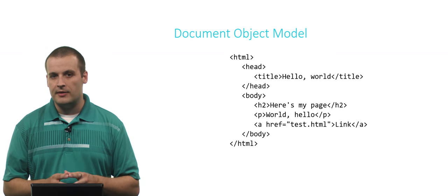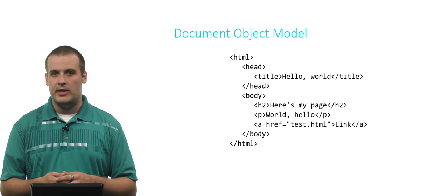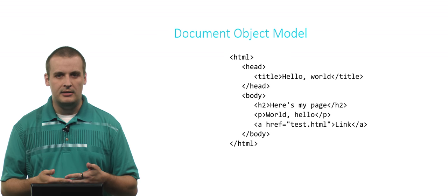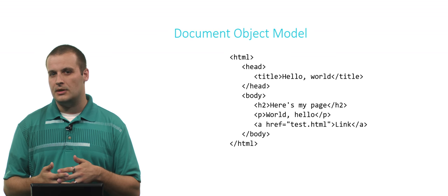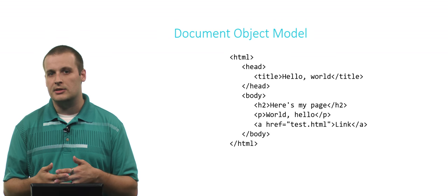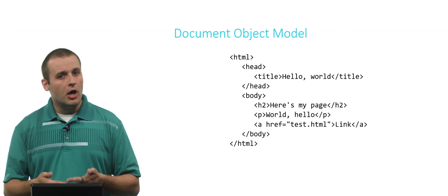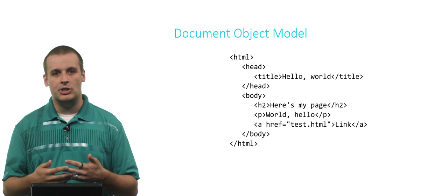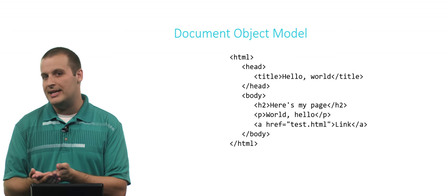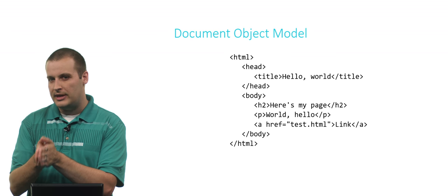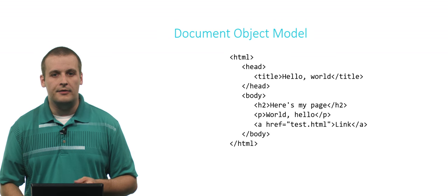Here's an example of a very simple HTML website. There are HTML tags; inside of that a head and a body. Inside of the head, we have a title — hello world. Inside of the body, we have a couple of different tags: an h2 second-level header tag, a paragraph tag, and a link. All of this can be represented in JavaScript as a document object, arranged hierarchically, similar to how indentation shows nesting in HTML.